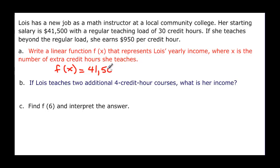So it wants us to write the linear function f(x) for her yearly income where x is the number of extra credit hours she teaches. So she earns $41,500. That's the given. But if she works over that she's going to add to that $950 for every credit hour she works extra. So it would be 950 times the number of hours that she works over.